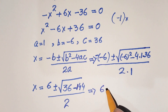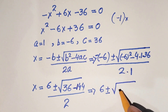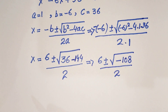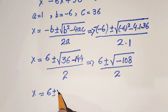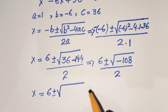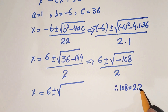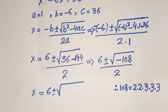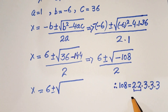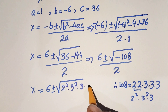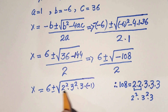So we have 6 plus or minus square root of negative 108 all over 2. We can factorize 108 as 2 times 2 times 3 times 3 times 3, which is 2 squared times 3 squared times 3 times minus 1.